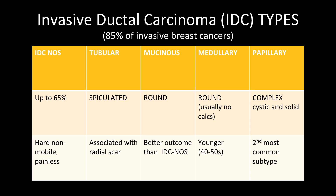I've added some descriptors for every type so you can remember buzzwords. IDC NOS is the most common — a hard, non-mobile, usually painless mass. Tubular carcinoma is often associated with a spiculated appearance on mammogram and with a radial scar. Mucinous and medullary are known for being more round; medullary is associated with younger patients and usually without calcifications, while mucinous is associated with a better outcome than IDC NOS. Finally, papillary carcinoma presents as a complex cystic and solid mass and is the second most common subtype after IDC NOS.